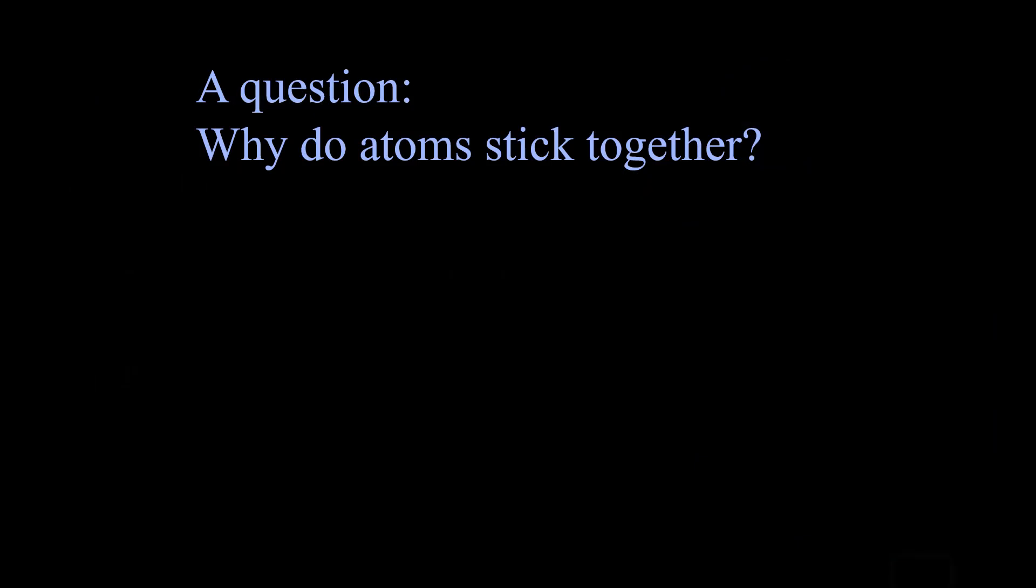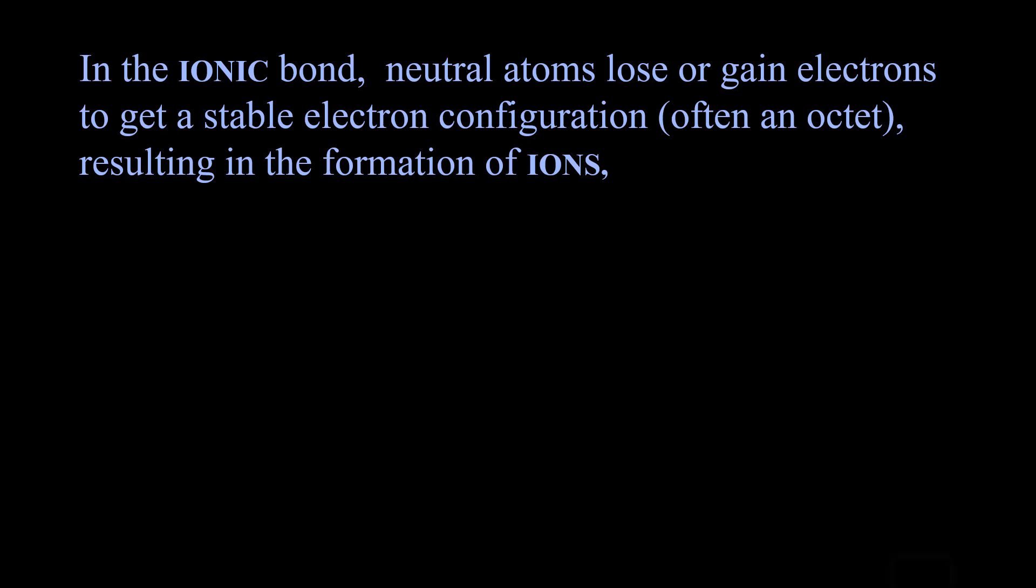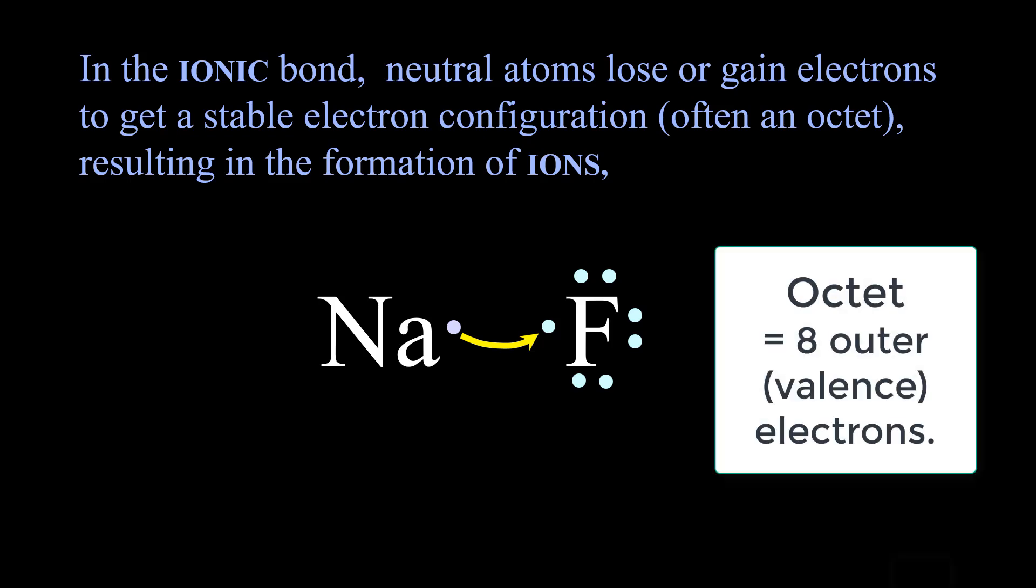Let's start with a question. Why do atoms stick together? In the ionic bond, neutral atoms lose or gain electrons to get a stable electron configuration, which is often the outer octet of a noble gas.